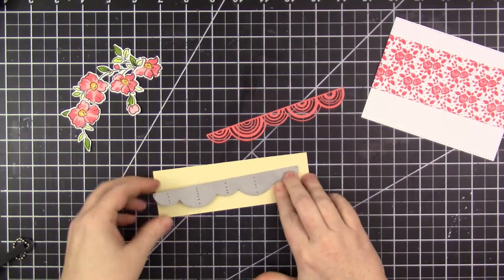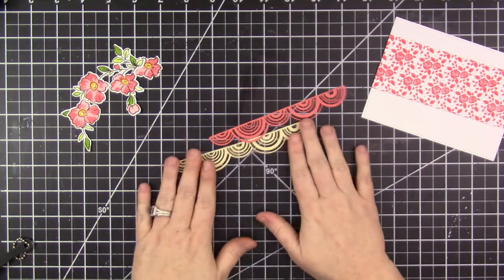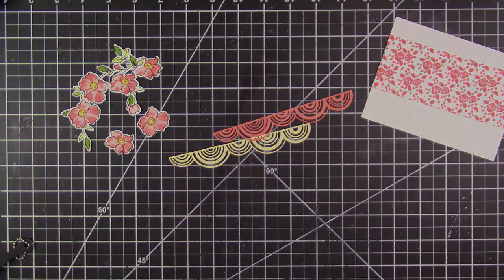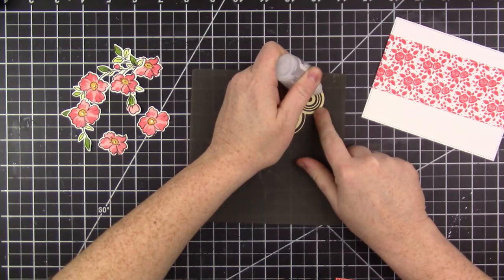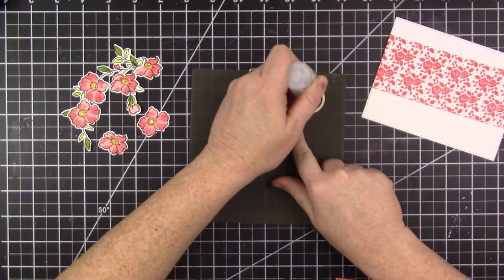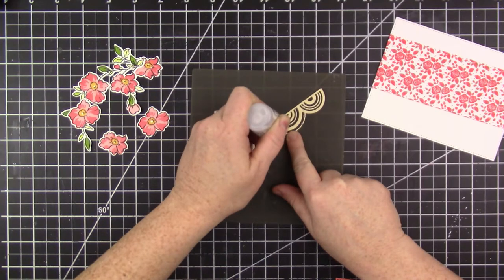I also die cut another piece because it's such a delicate die that I want to glue two of them together. Not only will this give the card more dimension, but it'll also give the die cut more stability too. I use Ranger Multi Medium Matte and apply it very lightly to the front of the second die cut piece.